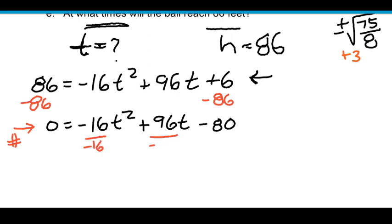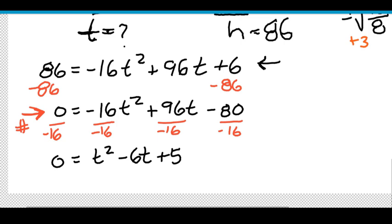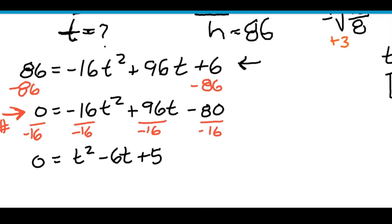Now just be aware you can only do this if it equals a number. If it equals f of x, that's not a number, that's a function. And so we have 0 on the left, t squared on the right, minus 6t plus 5. And this is a much nicer version to work with. And this one actually factors really well, really quickly. We can factor this as t minus 5 times t minus 1. And if you want to check, you can FOIL that back out and you'll get exactly where we just had. And so you set each factor to 0. t minus 5 equals 0. And then t minus 1 equals 0.